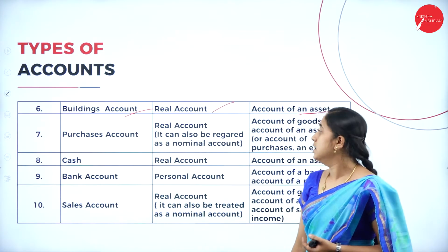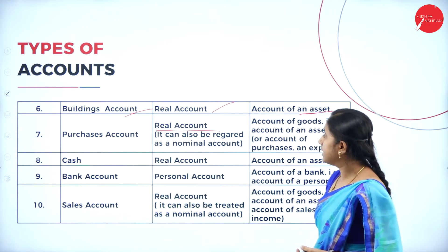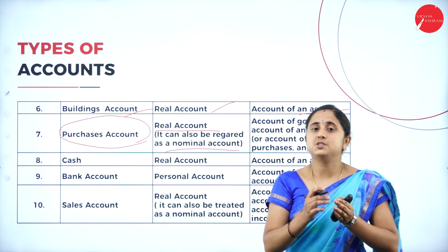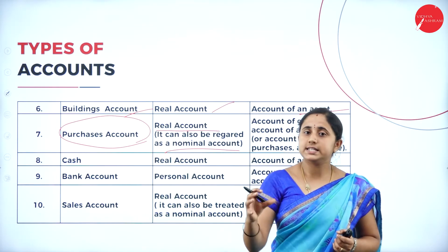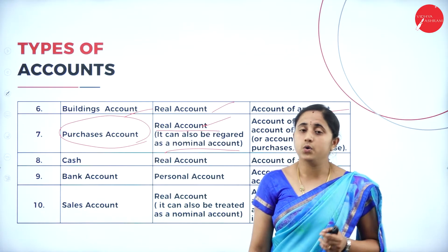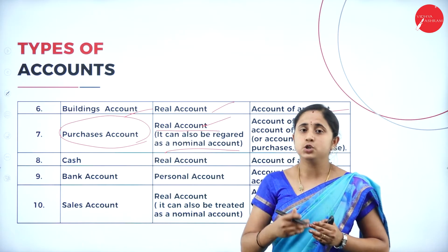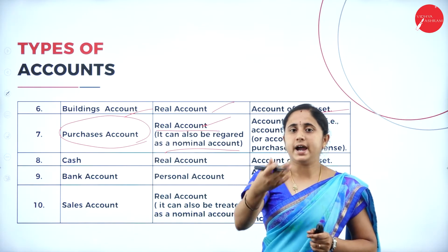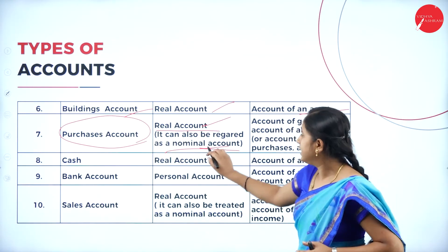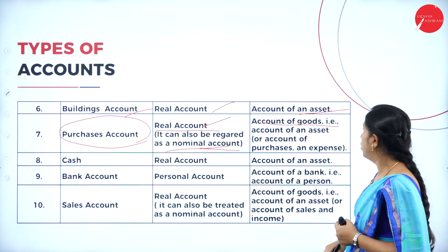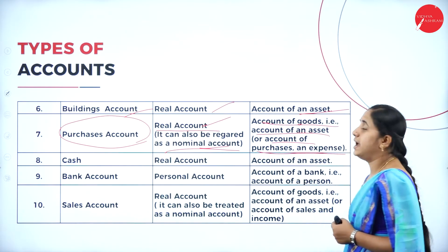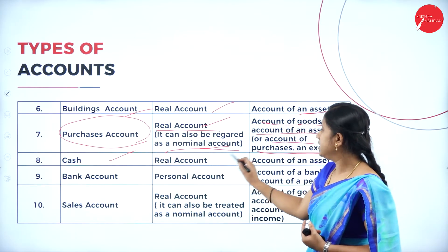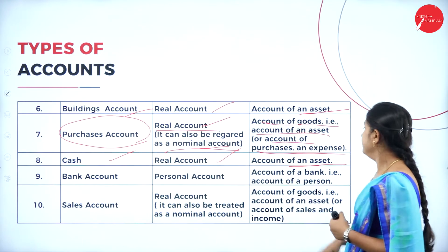Next, purchases account. Purchases account can be regarded as either a real account or a nominal account. If you consider the assets purchased for the organization, then purchase becomes a real account. If you consider the money paid for the purchase — the purchase process as an exchange of goods and money — then it comes under nominal account. So it is an account of goods (account of asset) or account of purchase as expense. Then cash — cash is a liquid asset, so it is a real account, account of an asset.